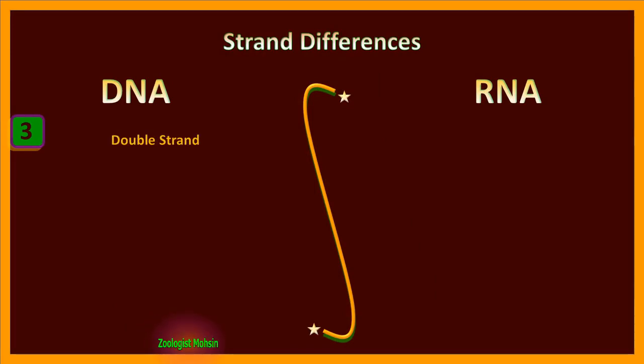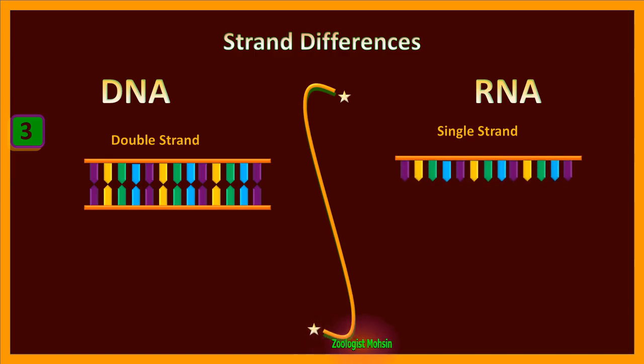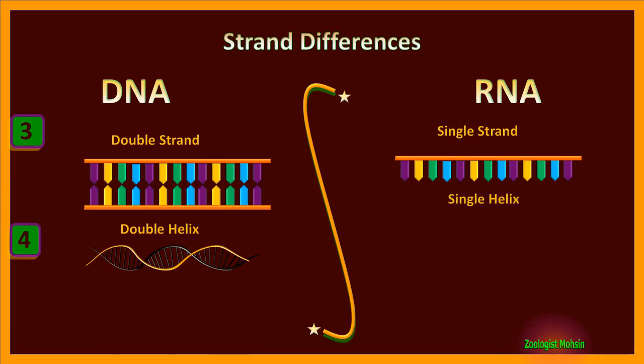Strand differences. Number three: DNA is a double-stranded molecule while RNA is a single-stranded molecule. Number four: DNA is a double helical molecule - double helix - and these two strands are twisted on each other to form a spiral arrangement while RNA is a single helix.